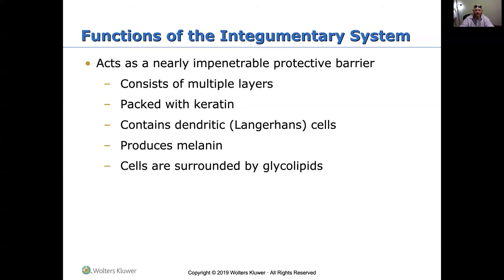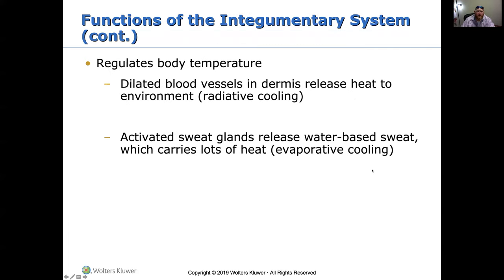The skin has multiple layers, is full of keratin, contains dendritic cells, and produces melanin — which determines skin color based on the amount present. Cells are surrounded by glycolipids. Something very important is that the skin helps regulate body temperature. Dilated blood vessels in the dermis release heat to the environment — that's how we cool off. Activated sweat glands release water-based sweat, which carries heat. We have radiative cooling and evaporative cooling when we actually sweat.